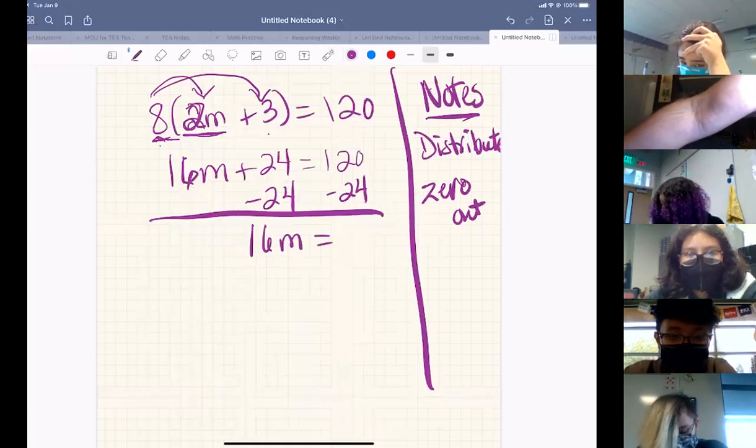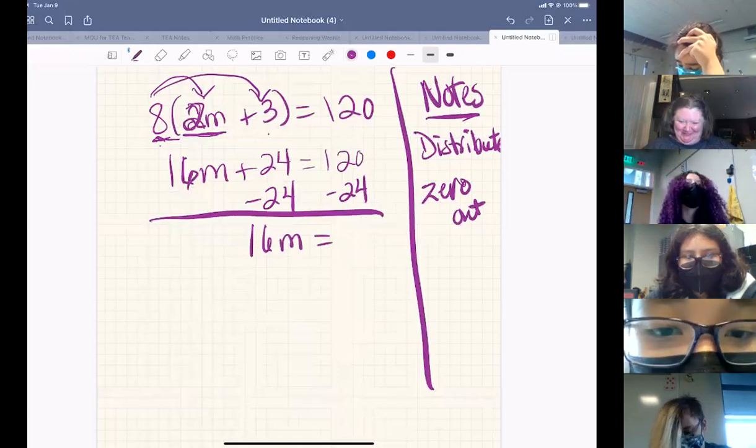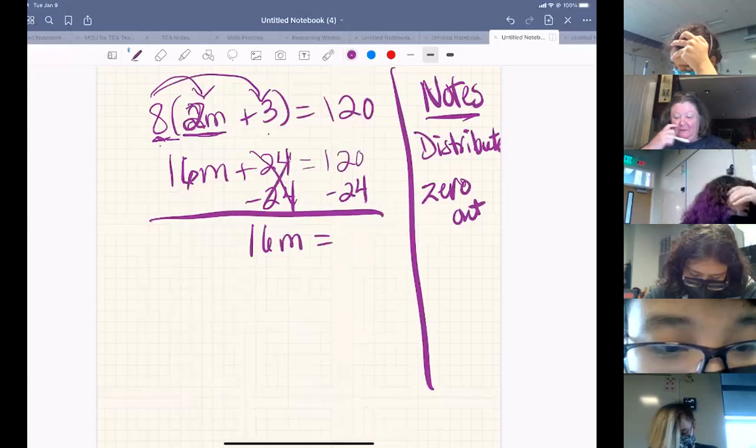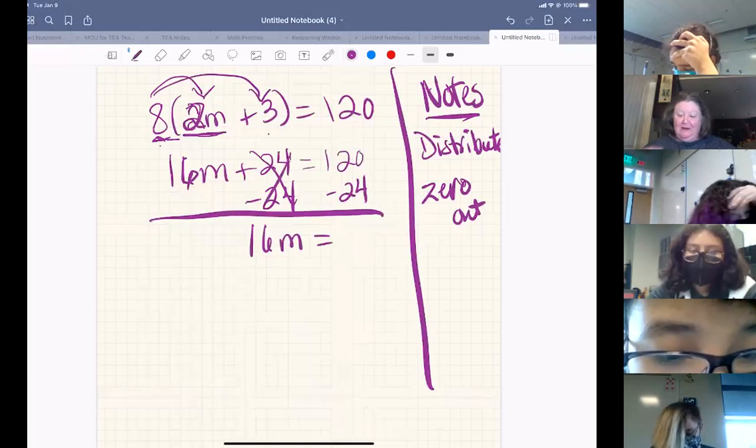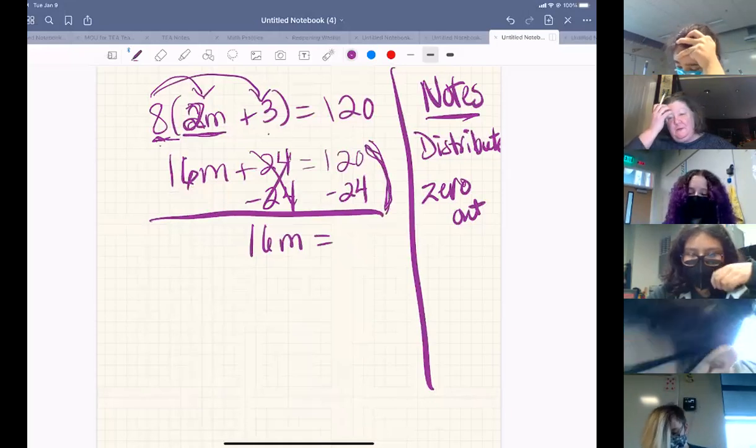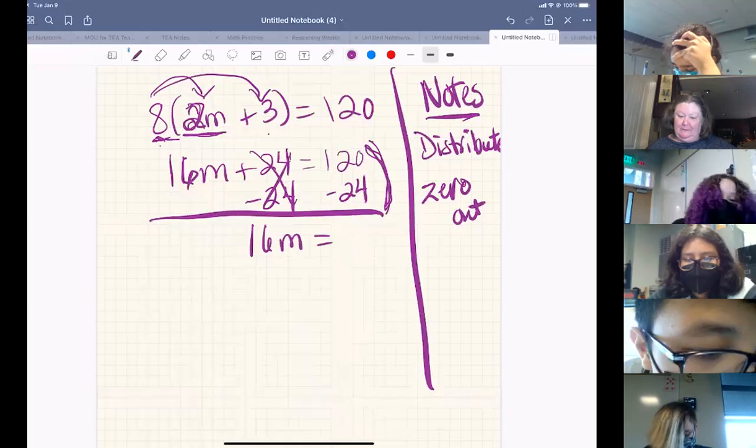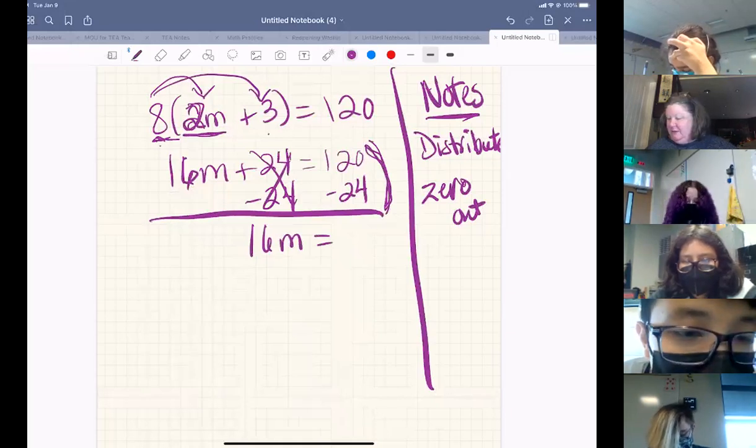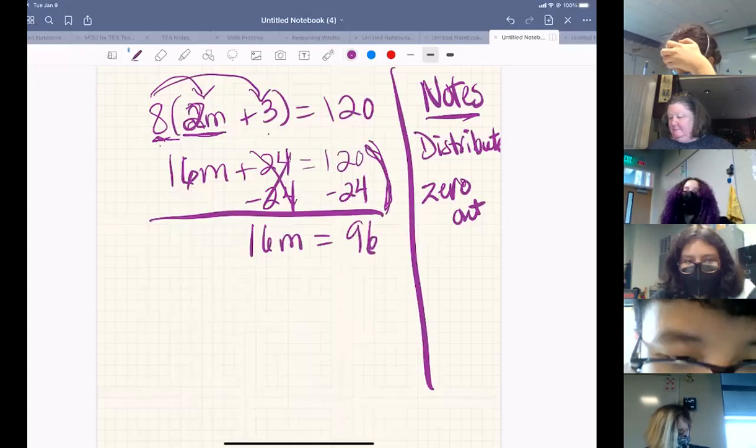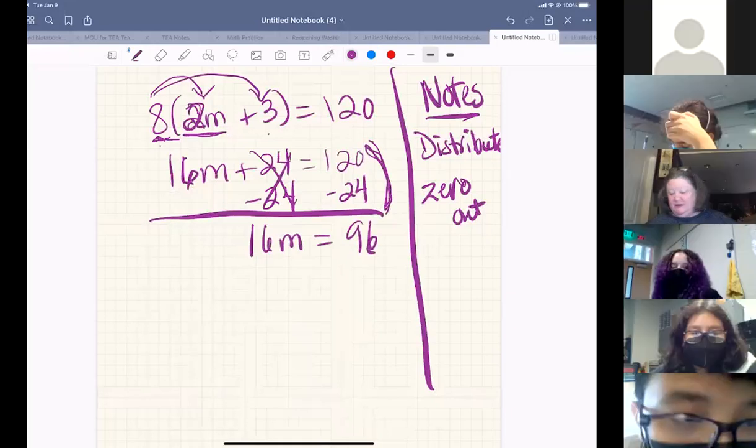That is my husband bringing me more tea. 24, positive 24 minus 24 became zero. And then on the right side of the equation, I can take the 24 from the 120 because they're like terms. 120 minus 24 is 96.